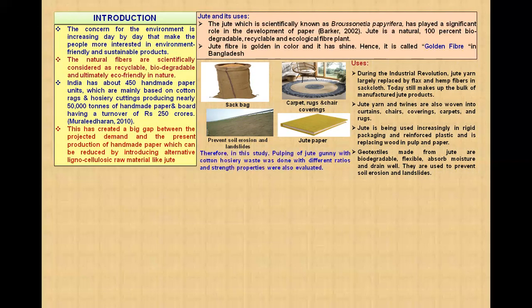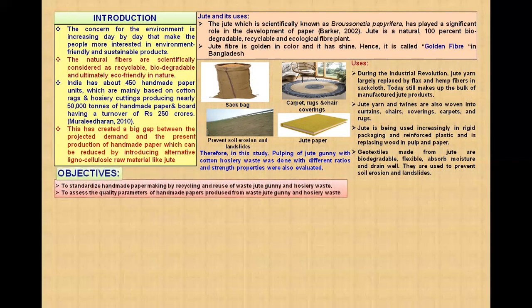Therefore, in this study, pulping of jute gunny with cotton hosiery waste was done with different ratios and strength properties were also evaluated. Coming to the objectives of the study, first objective is to standardize handmade paper making by recycling and reuse of waste jute gunny and hosiery waste. Second one is to assess the quality parameters of handmade papers produced from waste jute gunny and hosiery waste.